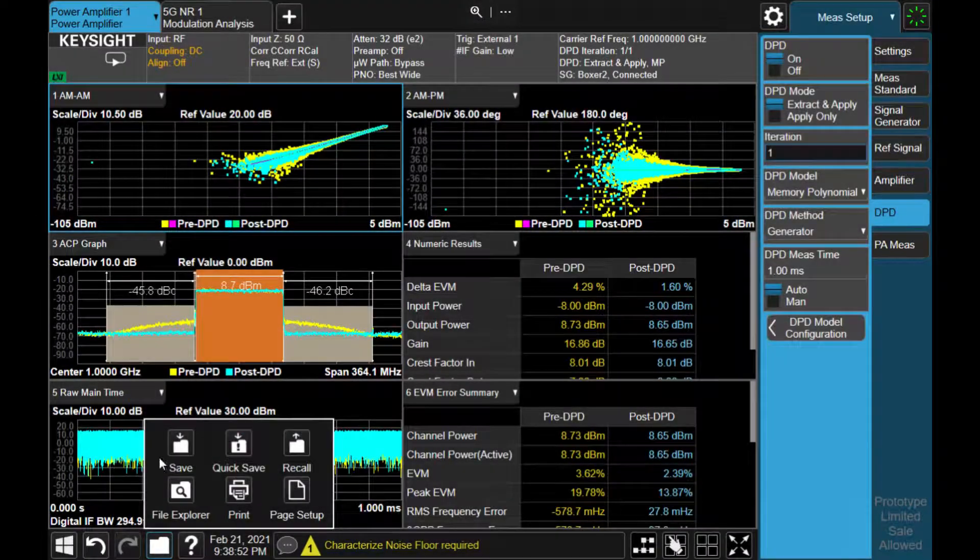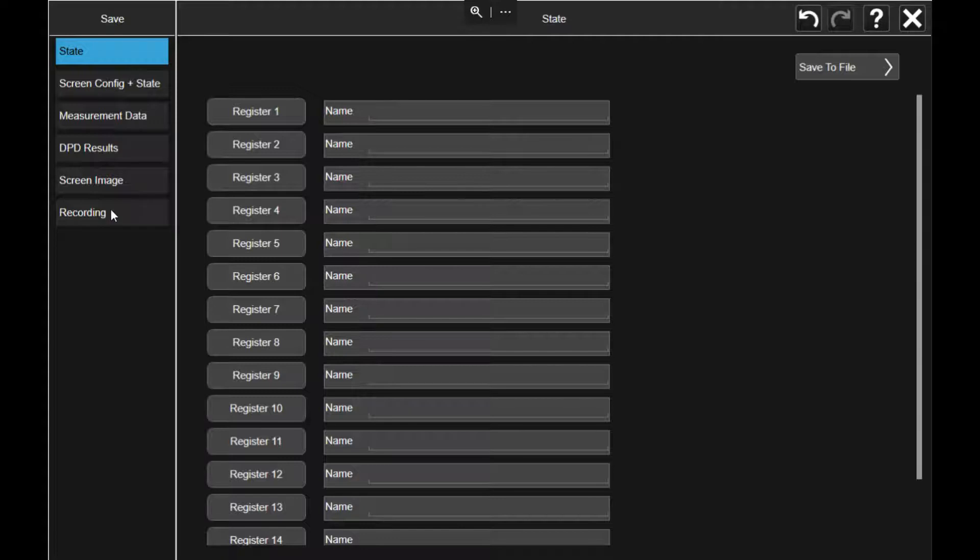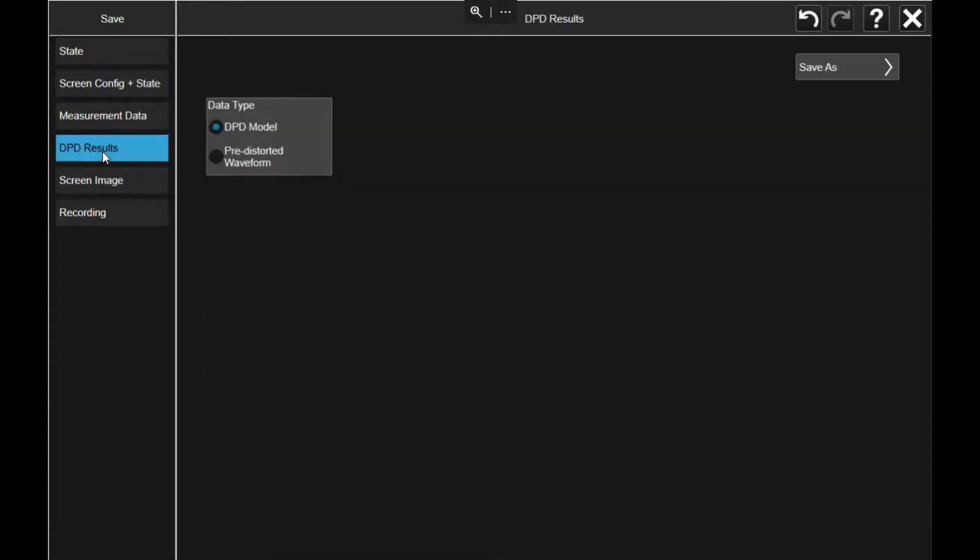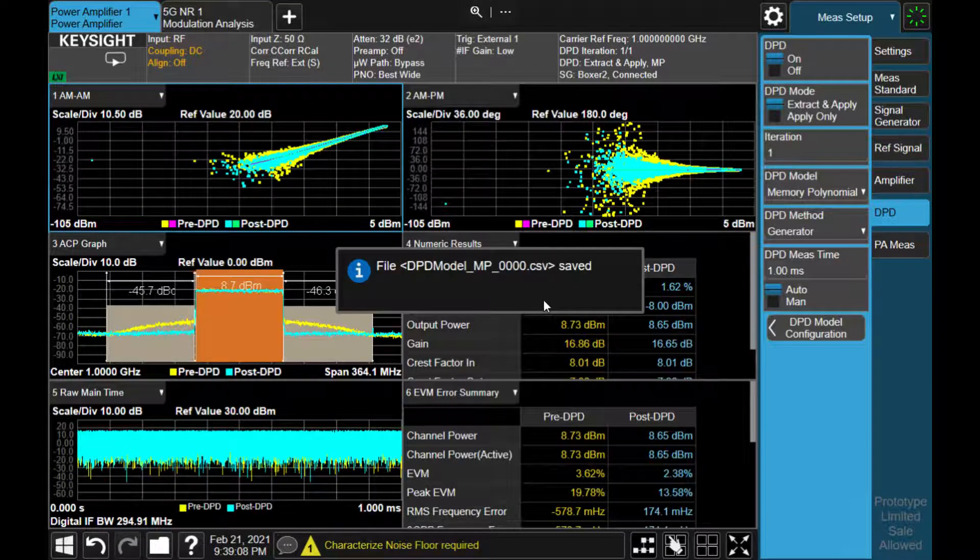Once you're happy with the DPD result, you can go to save menu and select the DPD result to export the DPD model. And select save as, and specify file name, and press save button. That will save the DPD model to the CSV file.